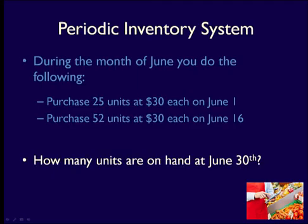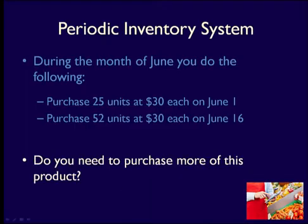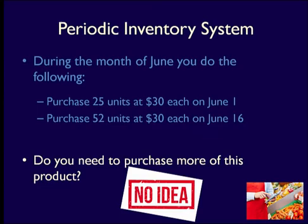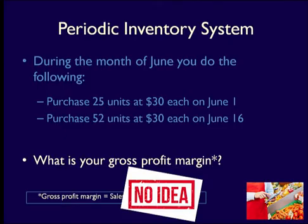What problems does this create? Well, if you want to know how many units are left in inventory at June 30th, you will have no information about that. If you want to know if you should purchase more inventory at the end of June, you can't find that out using your inventory tracking system either. You have to walk around your location and count what you have in order to figure out what you need. Gross profit margin is selling price less the cost of your inventory. Since you don't have information about the cost of the units sold, you can't calculate this either and you therefore don't know if you're profitable or not.